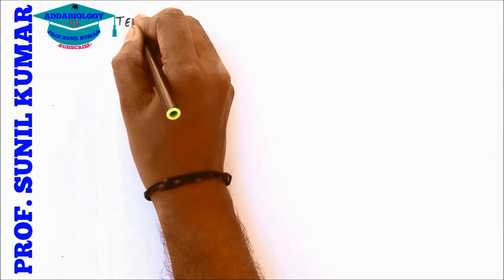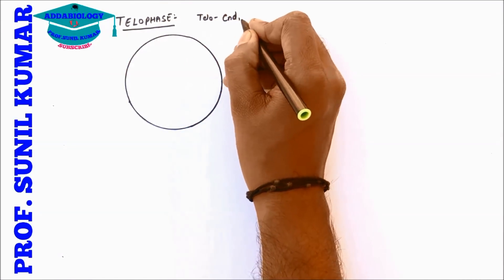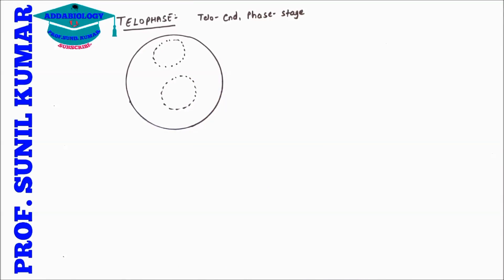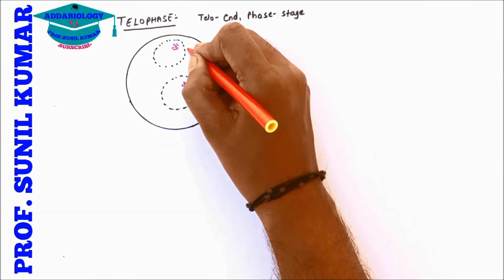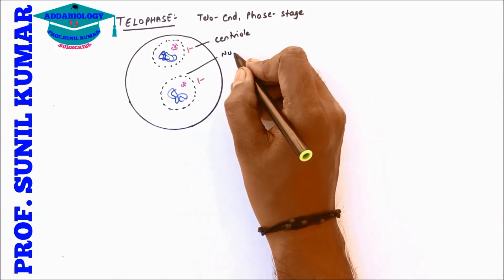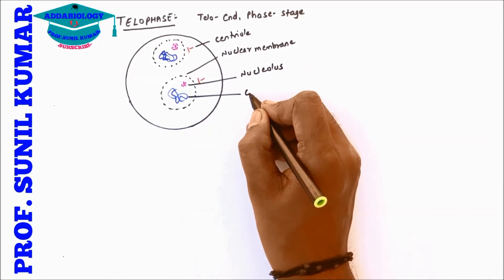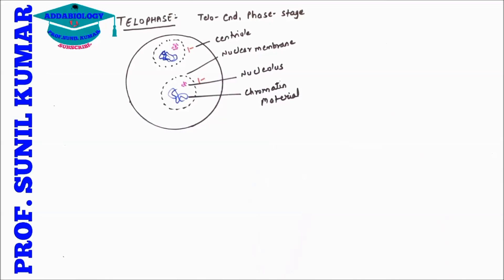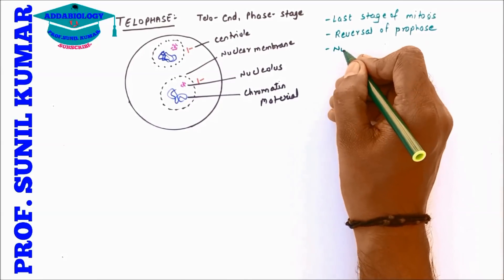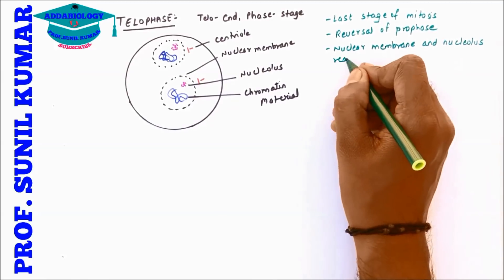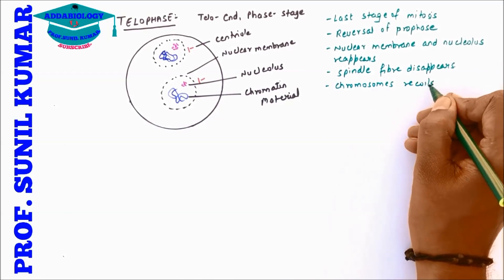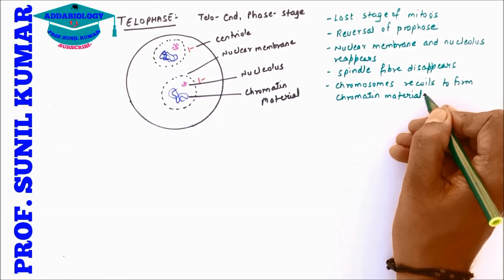Telophase: 'telo' means end, so it is the last stage of mitosis, or the last stage of karyokinesis. Here the nuclear membrane and nucleolus reappear. The daughter chromosomes recoil to form chromatin material again. For an exam, write: it is the last stage of mitosis; reversal of prophase takes place; nuclear membrane and nucleolus reappear; spindle fibers disappear; daughter chromosomes recoil to form chromatin material.